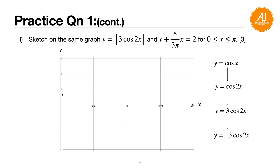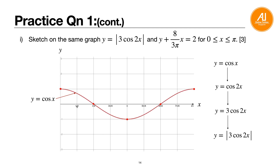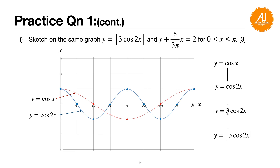Cosine x goes from 1 to minus 1 — a big belly shape. Connect the guiding points. Now cosine 2x means two small cosine waves from 0 to 2π: one from 0 to π and another from π to 2π. Mark your guiding points, connect the dots for each small wave. The original cosine x can be left as a dotted line. The blue curve is cosine 2x.